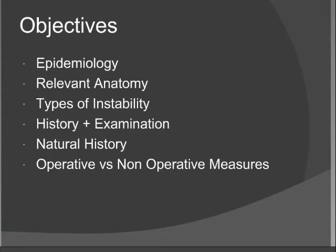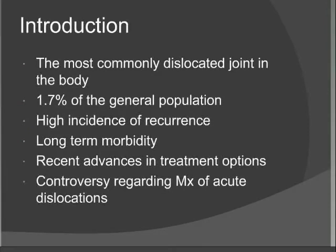The shoulder is the most dislocated joint in the body — up to 1 in 50 of the general population will suffer a shoulder dislocation at some stage in their life. There's a very high incidence of recurrence, which leads to long-term morbidity, multiple hospital visits, and possible operations. There have been a lot of recent advances in treatments, specifically in regard to arthroscopic treatment for these conditions.